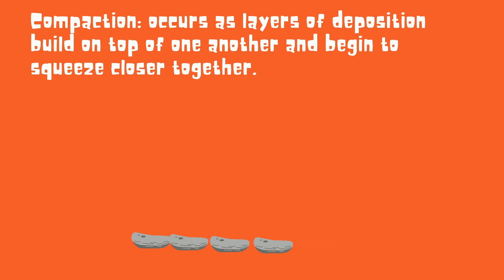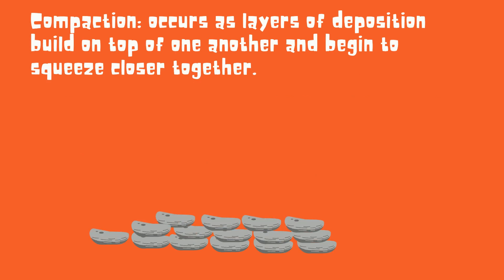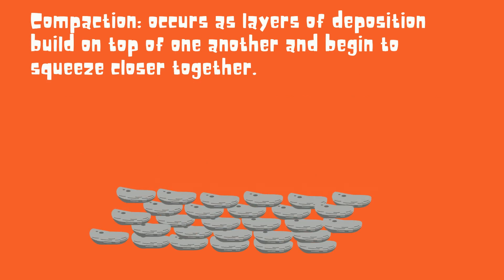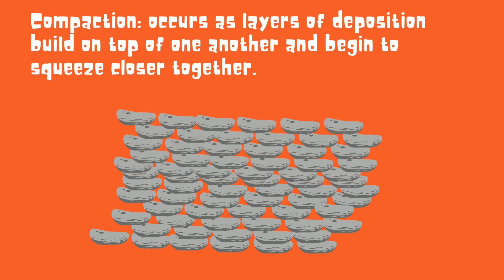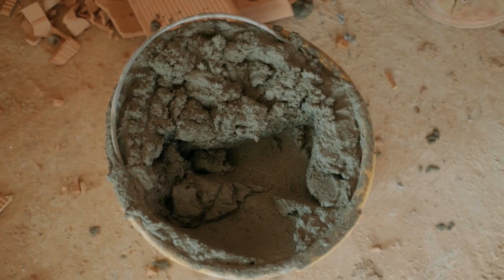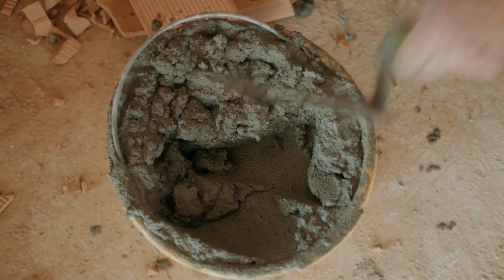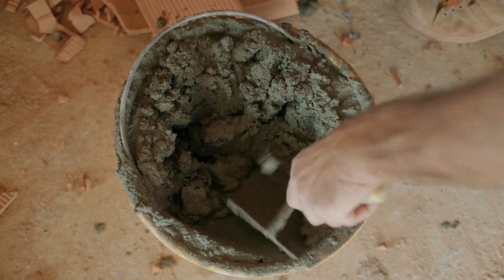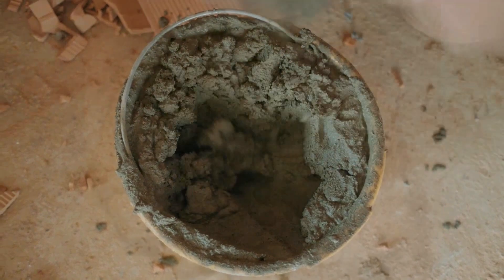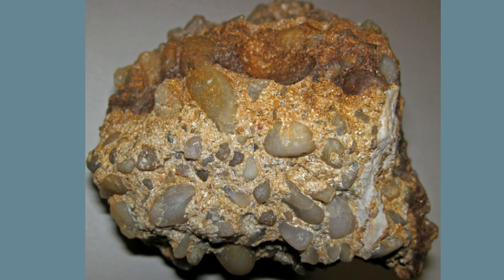Over time, compaction occurs as layers of deposition build on top of one another and begin to squeeze together. Cementation occurs eventually when the minerals in the water act like glue and cement all the pieces together. The end result is a sedimentary rock.